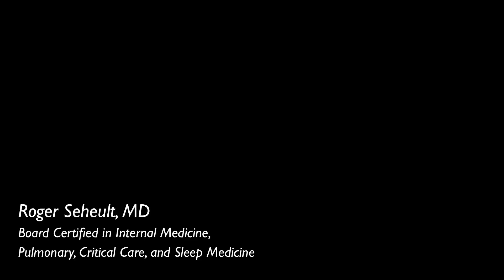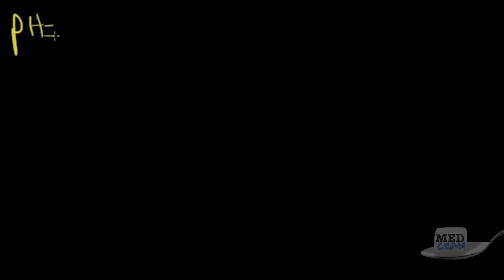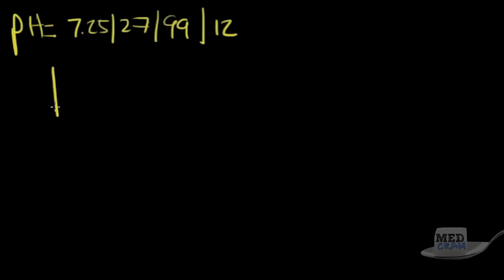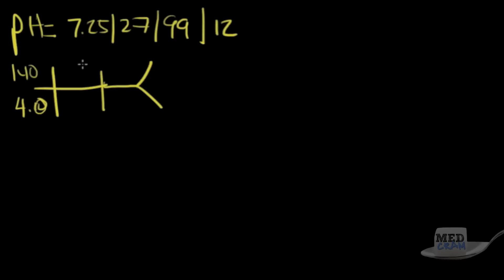Welcome to Medical Acid Base Part 7. We're going to go over some more questions. The next question has a pH of 7.25, pCO2 of 27, O2 of 99, and a bicarb of 12. The CHEM7 shows a sodium of 140, potassium of 4.0, chloride of 96, and a bicarb of 12.